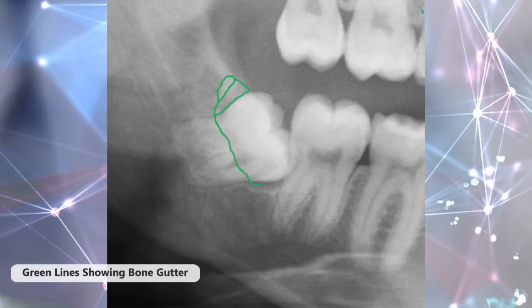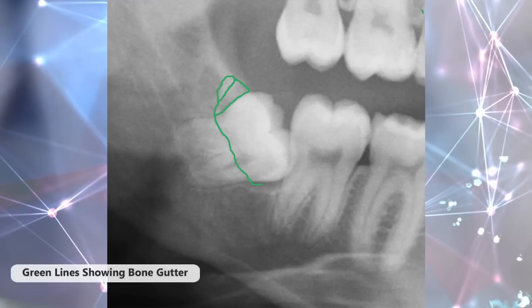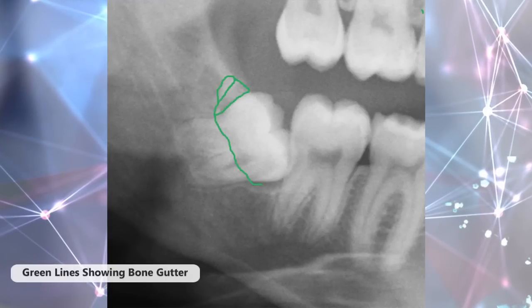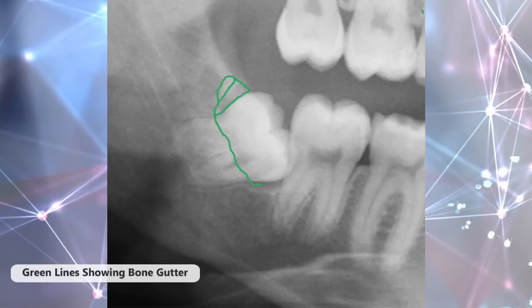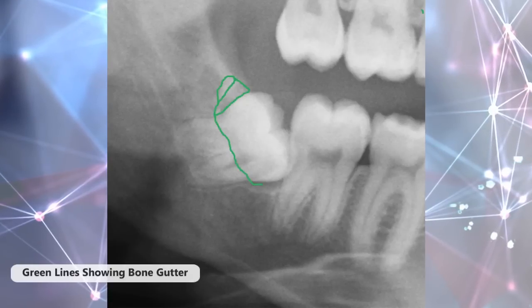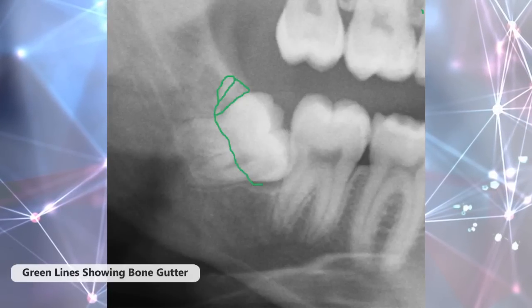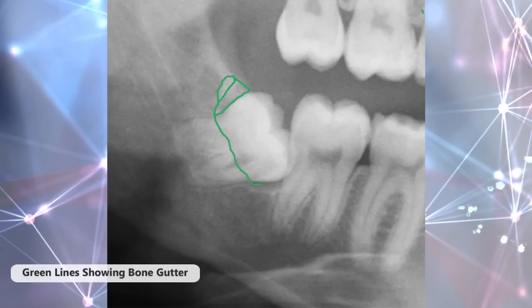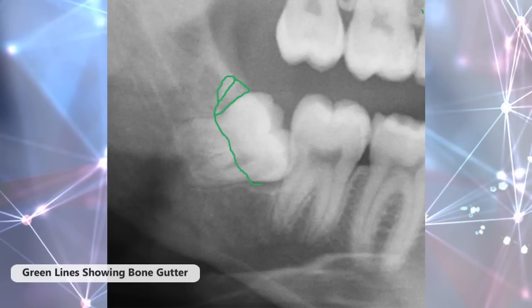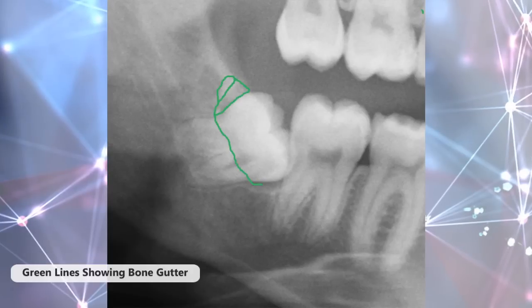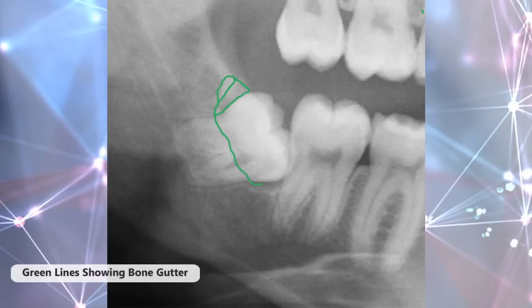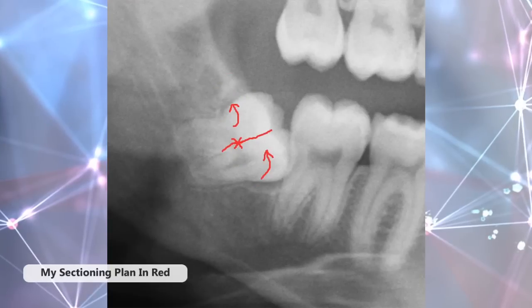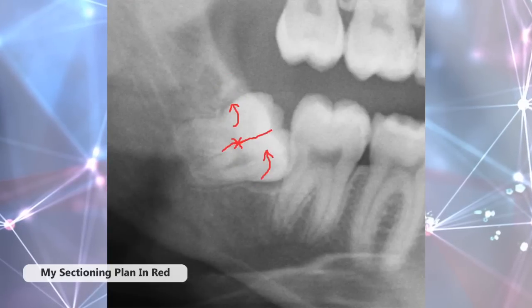The green line shows how much we gutter and how far we extend. I'll talk about guttering depth and why it's important to gutter the buccal bone. It's also very important to remove or tunnel some of the distal cortical bone to the crown, as this will help with elevating the distal root and avoid any breakage or fracture. The red line shows our section — we'll follow the long axis of the tooth.